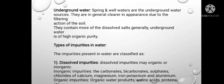Now we will see impurities in water. There are three types of impurities. First, dissolved impurities — dissolved impurities may be organic or inorganic. Inorganic impurities include carbonates, bicarbonates, sulphates, and chlorides of calcium, magnesium, iron, potassium, and aluminium. Organic impurities include organic waste products, amino acids, proteins, etc.